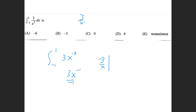If I add 1, that gives me 3x to the negative 1 over negative 1, which is just negative 3 over x, from negative 1 to 1. If I put 1 in, I end up with negative 3. Minus — if I put negative 1 in, that's 3 plus negative, giving me negative 6.